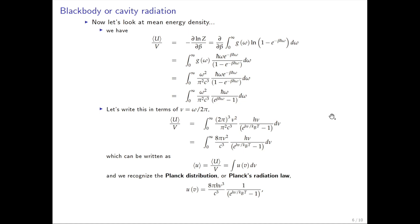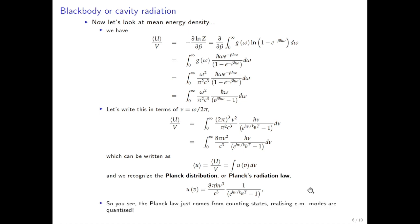Planck's law just comes from counting states. The key realization was first that the electromagnetic modes are quantized, and then just figuring out how to count them — going to a large box and taking an integral. That's all it is. Planck's law comes from counting states and recognizing that electromagnetic modes are quantized.